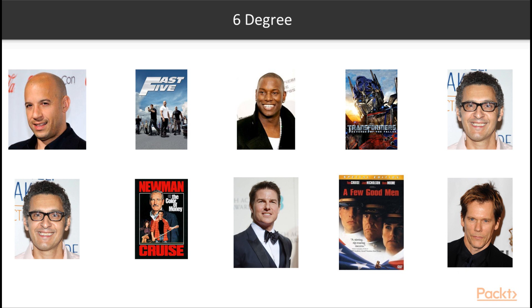The other important construct within a graph database is called a relationship, or an edge. A relationship in Neo4j is the same thing as an edge in graph theory. This relationship ties two nodes together. For instance, the Vin Diesel node is related to the Fast Five movie node, and you can put a label on that relationship — for instance, ACTED IN. So Vin Diesel acted in the movie Fast Five. Tyrese Gibson acted in the movie Fast Five. Tyrese Gibson also acted in the movie Transformers Revenge of the Fallen, etc.